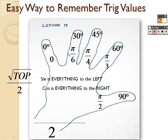For example, what's sine of 30 degrees? You put your ring finger down because that's your 30 degree finger. Sine is everything to the left — how many fingers are to the left of your ring finger? Just one. So it is the square root of 1 over 2. The square root of 1 is just 1, so sine of 30 degrees is 1/2. If you don't believe me, type it in your calculator — sine of 30 degrees equals 1/2.